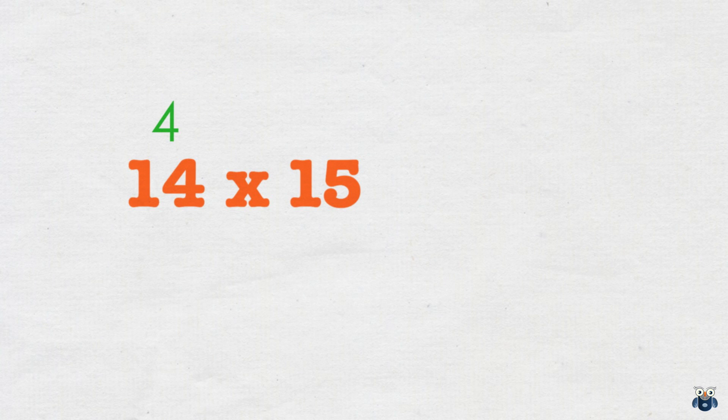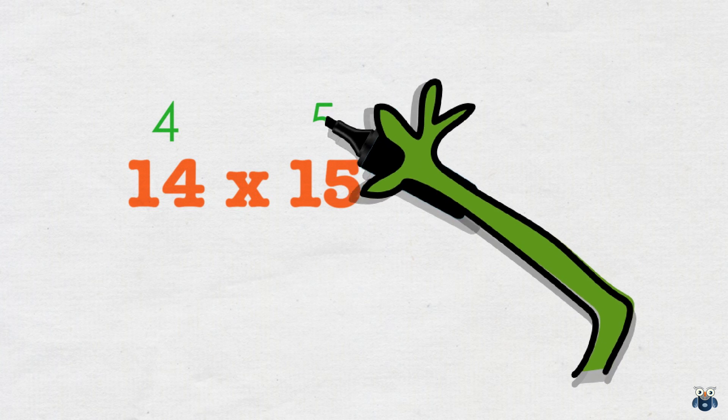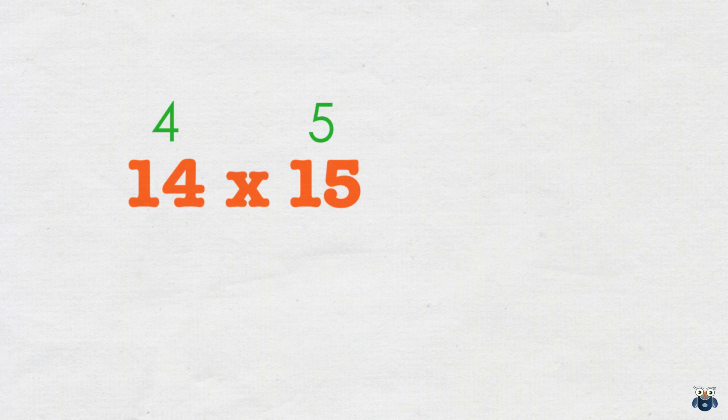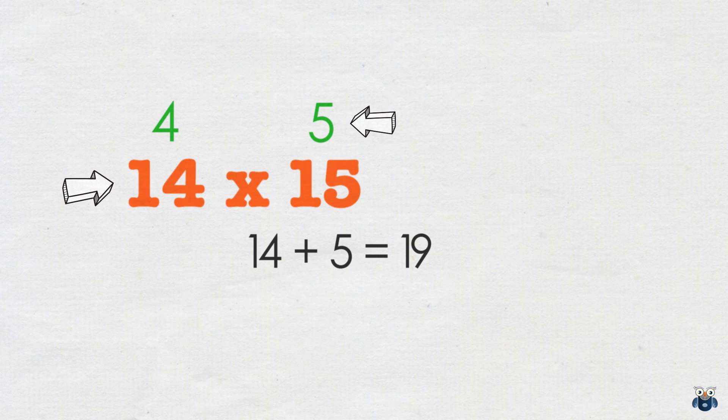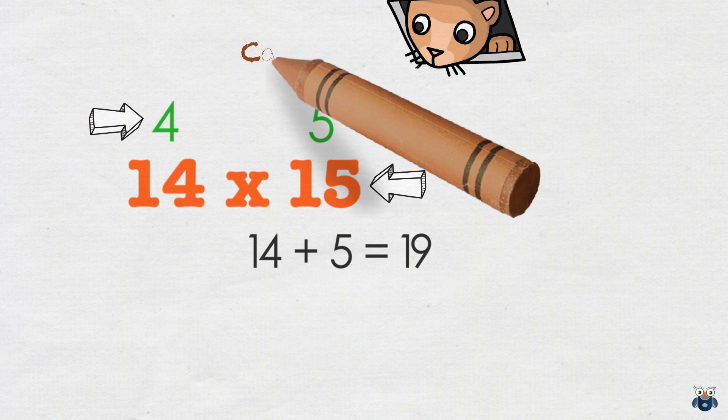14 is 4 more than 10. 15 is 5 more. So let's put this down. We then add the first number and second deficit. So 14 plus 5 is 19. We could have also added 15 and 4 to get the same result. Please make a note of this.